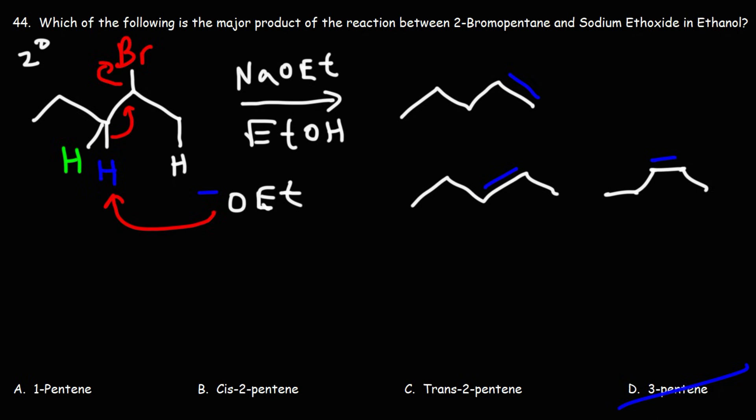Which one is going to be the major product? The major product is usually the most stable alkene. And the most stable alkene is going to be trans-2-pentene. This is a mono-substituted alkene. As you can see, if you look at the two double bonded carbon atoms, there's only one R group or one carbon attached to those two double bonded carbon atoms.